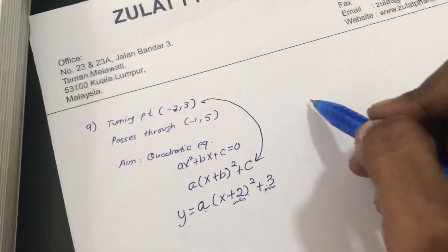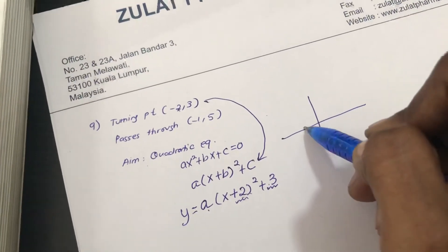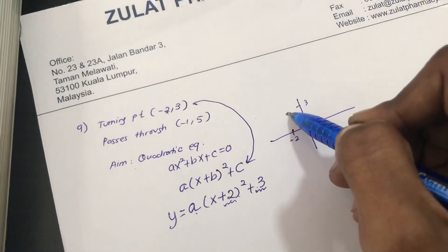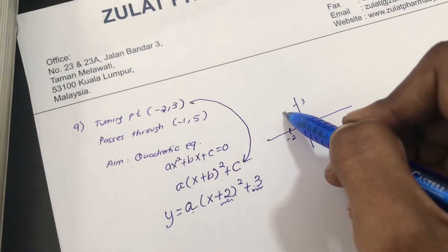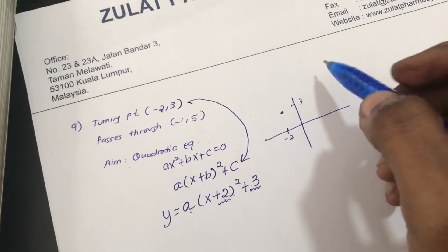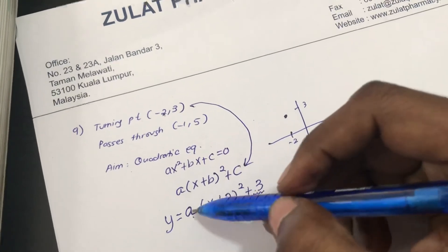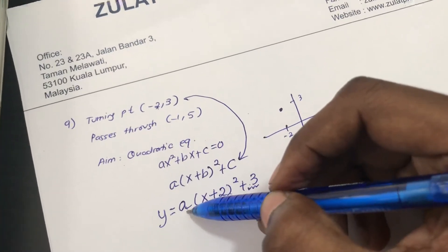Okay, so if I'm drawing, negative 2 is here and then the y value is here, 3. So I don't know whether this is a happy graph or sad graph. I don't know. I know the vertex is somewhere here. I need to get the a value. How do I know if this is happy or sad?